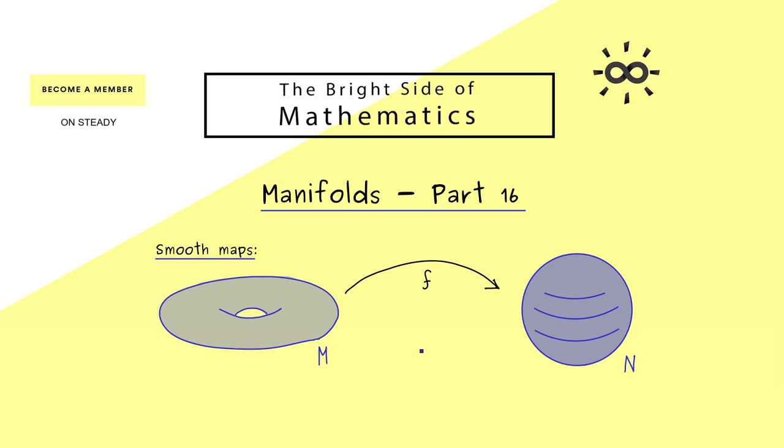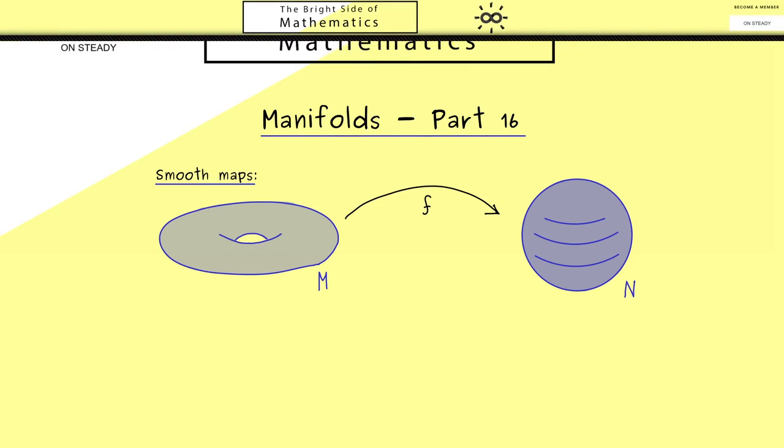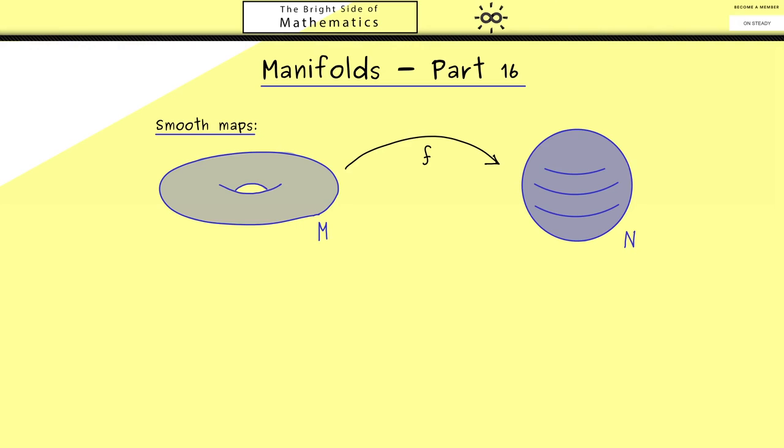Now the notion continuous makes immediately sense for such a map because we have topological spaces left and right. However, this also means that the notion differentiable does not make sense immediately. For example, you already know from real analysis that in order to define a derivative we need to measure distances. But in general we don't measure distances in topological spaces.